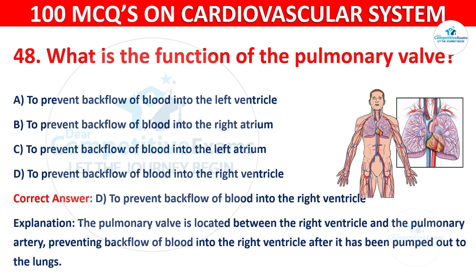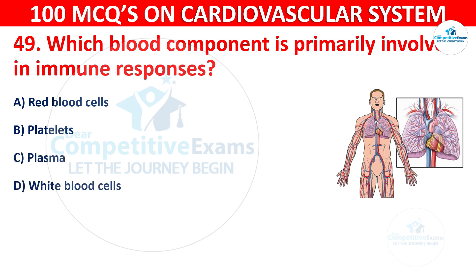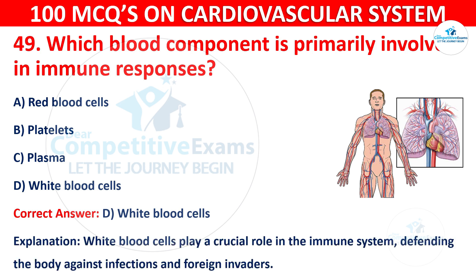Question 49: Which blood component is primarily involved in immune responses? Options are: Red blood cells, Platelets, Plasma, or White blood cells. The correct answer is D, White blood cells. White blood cells play a crucial role in the immune system, defending the body against infection and foreign invaders.